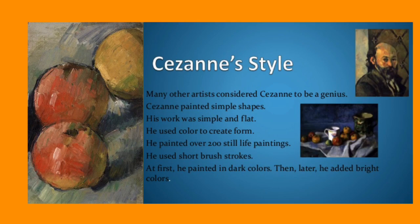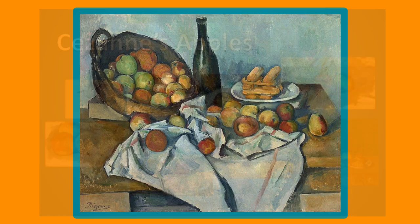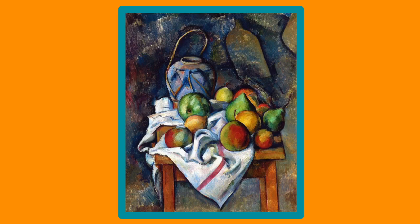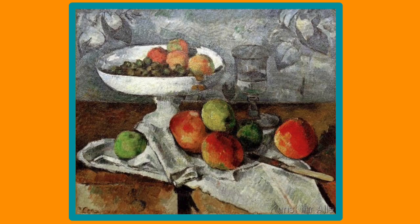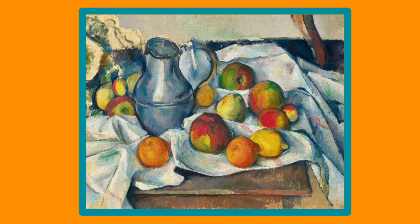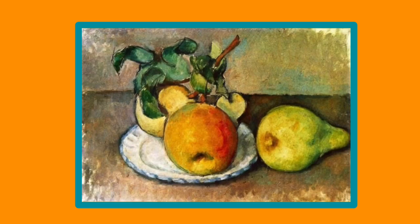He painted a lot of fruit — in particular he loved to paint apples. In his paintings you often see that the fruits are painted in warm colours and the background in a contrasting colour or in cool colours. This helps the fruit to become the focal point of his paintings. The focal point is the part of the painting that the eye goes to first.